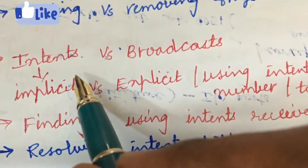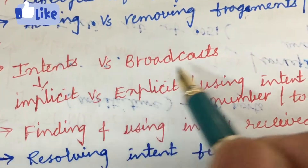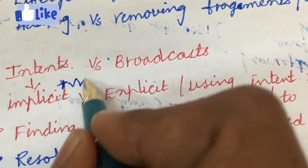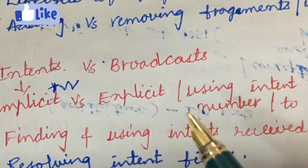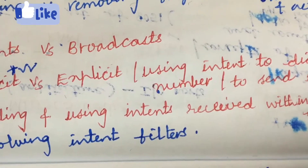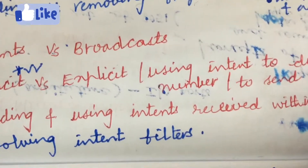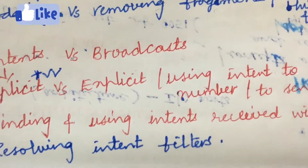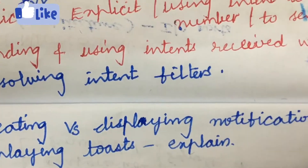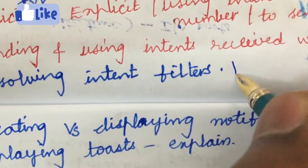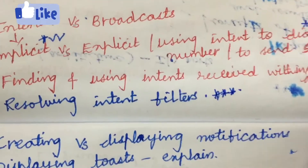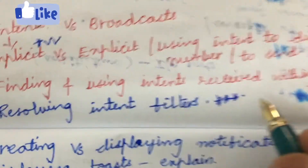The differences between intents versus broadcasting, and implicit as well as explicit intents — related to implicit intents, we can expect a question this time. Using intent to dial a number or to send a message may also be one of the very important questions. Finding and using intents received within an activity, and resolving intent filters, may also be one of the 5-mark questions. From this part we can expect the fifth question.